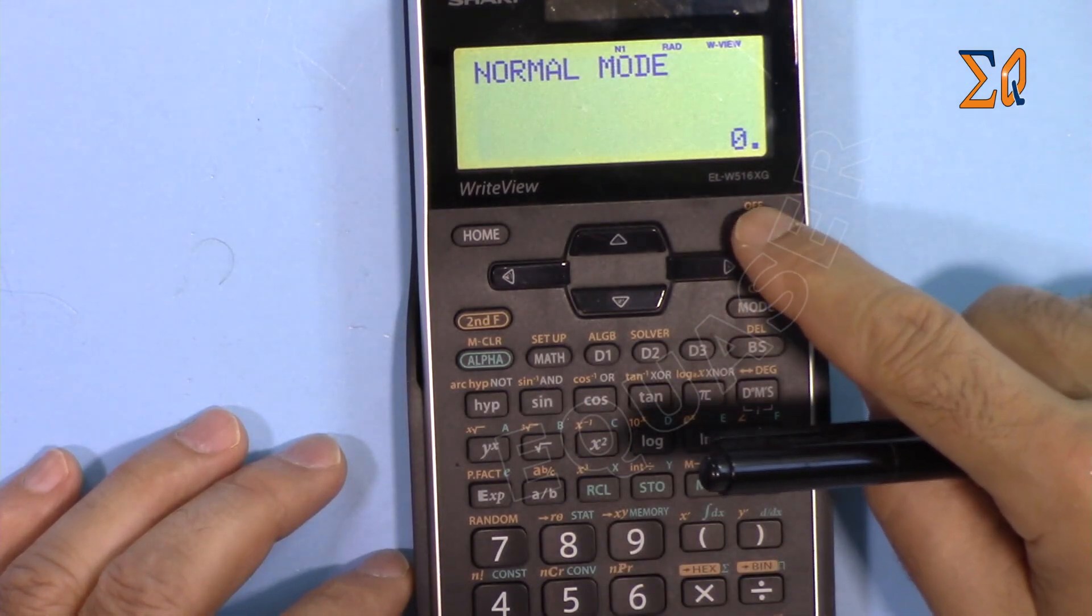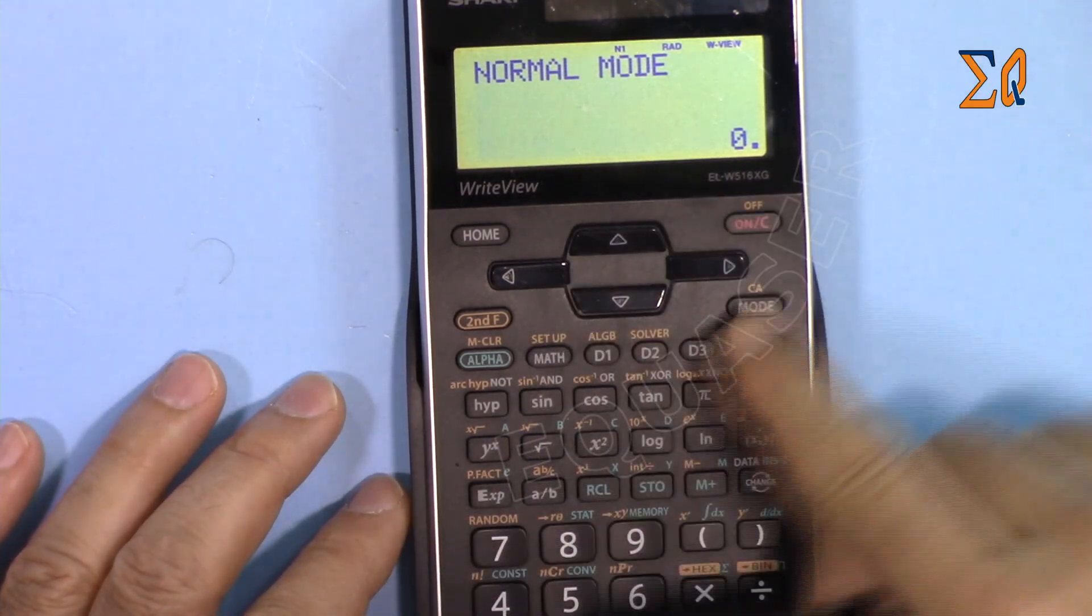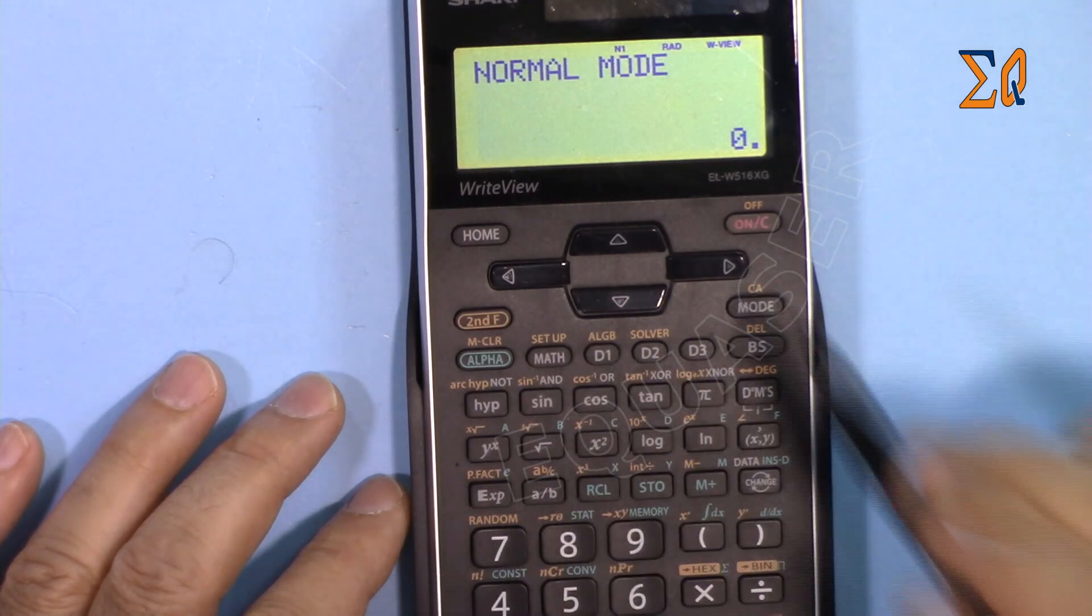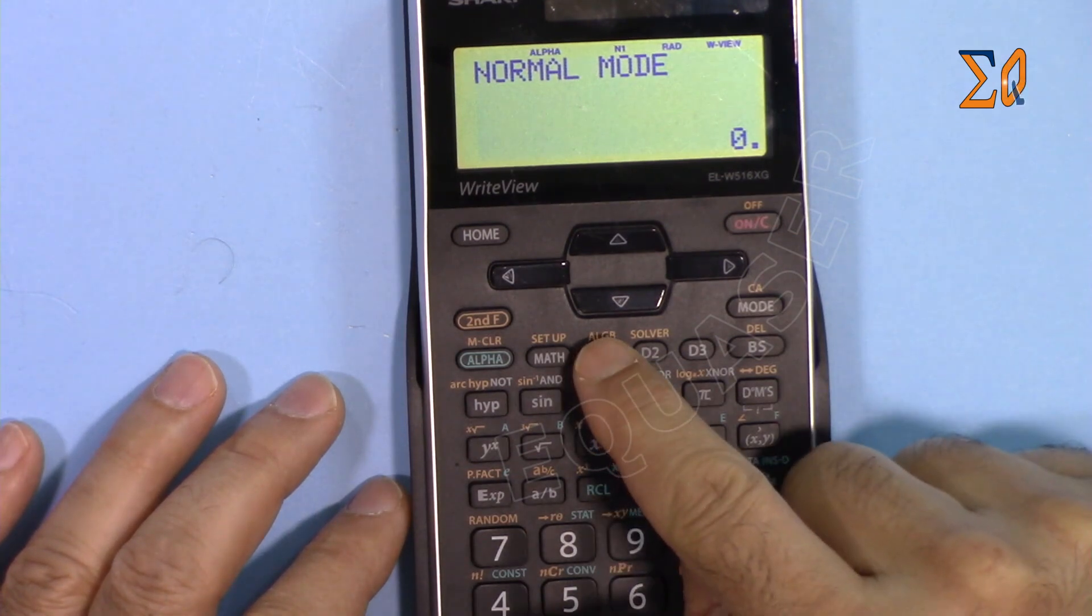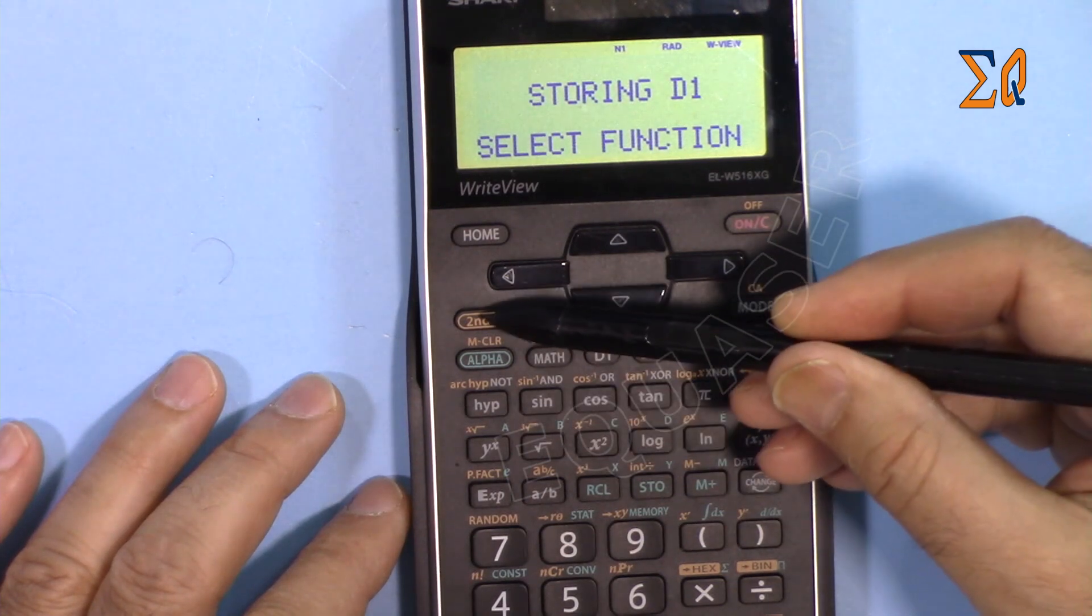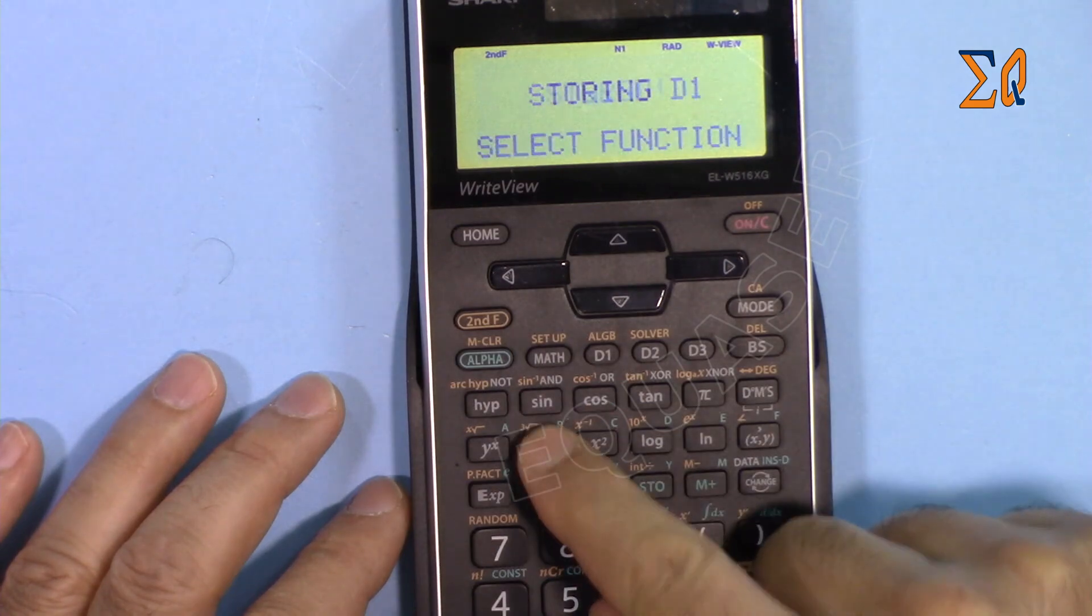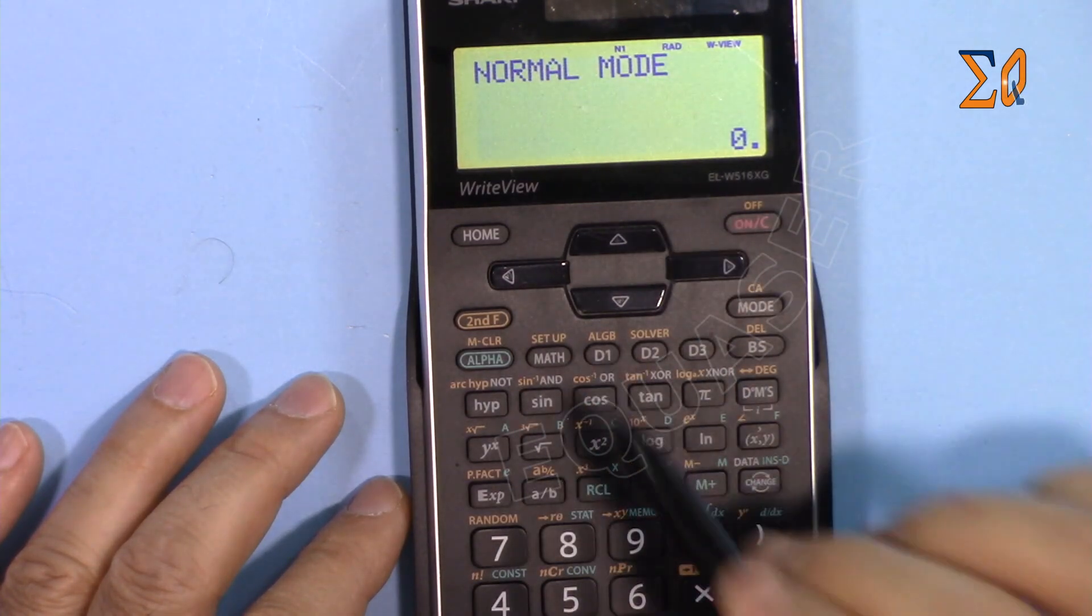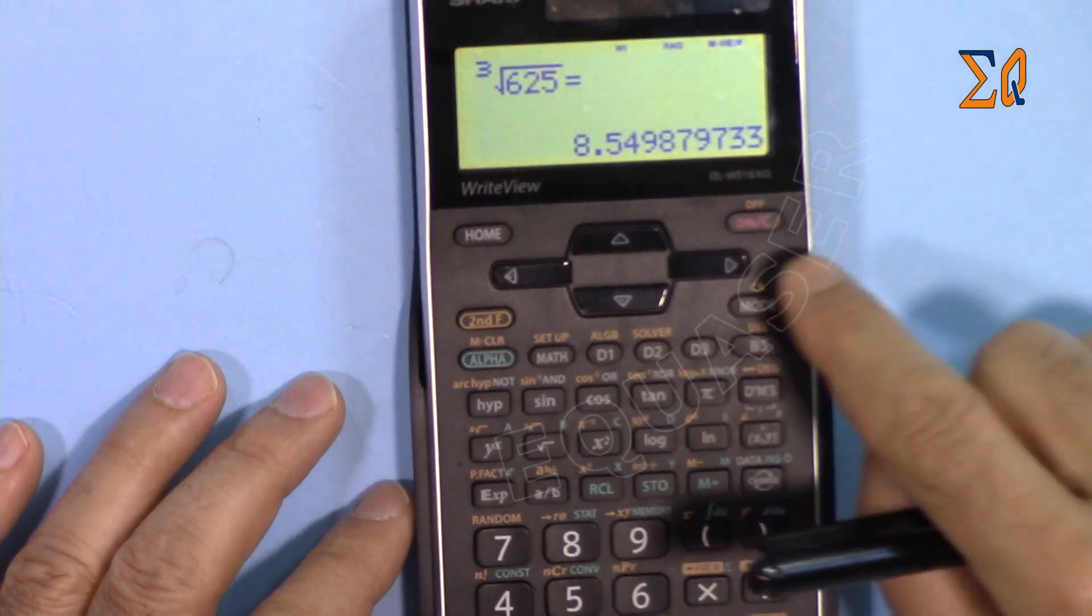For example, let's say you want to store here the cube function. So you press STO and then this one. Now it says select the function. Now to select the cube function, we have to press second function and then this button. Now it's stored. If you want to use this as a cube function anytime, you just press it, it's the cube function, you just enter your value and it will do the calculation. So with one button it will be done.